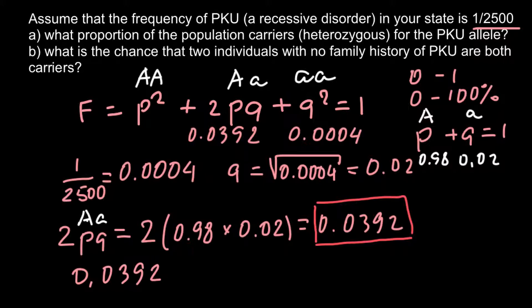And what is the probability that the second person also would be a carrier? The probability is exactly the same, so 0.0392. Because these are two independent probabilities, we just have to use the rule of multiplication for these two probabilities to happen together. And our final answer would be 0.0015. And now this is the answer for the second question.